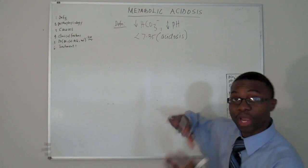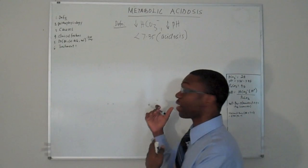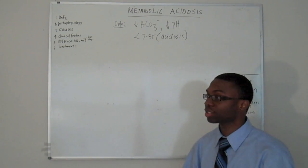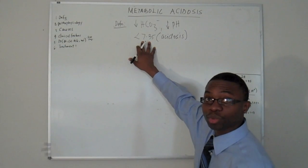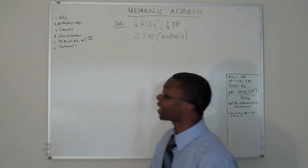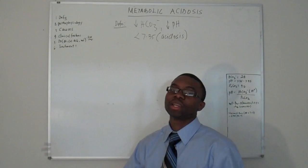Now, if it's greater than 7.45, it's alkalosis, which we're not going to talk about. This discussion is all about acidosis. So acid is less than 7.35. So, now, that's the definition of metabolic acidosis.